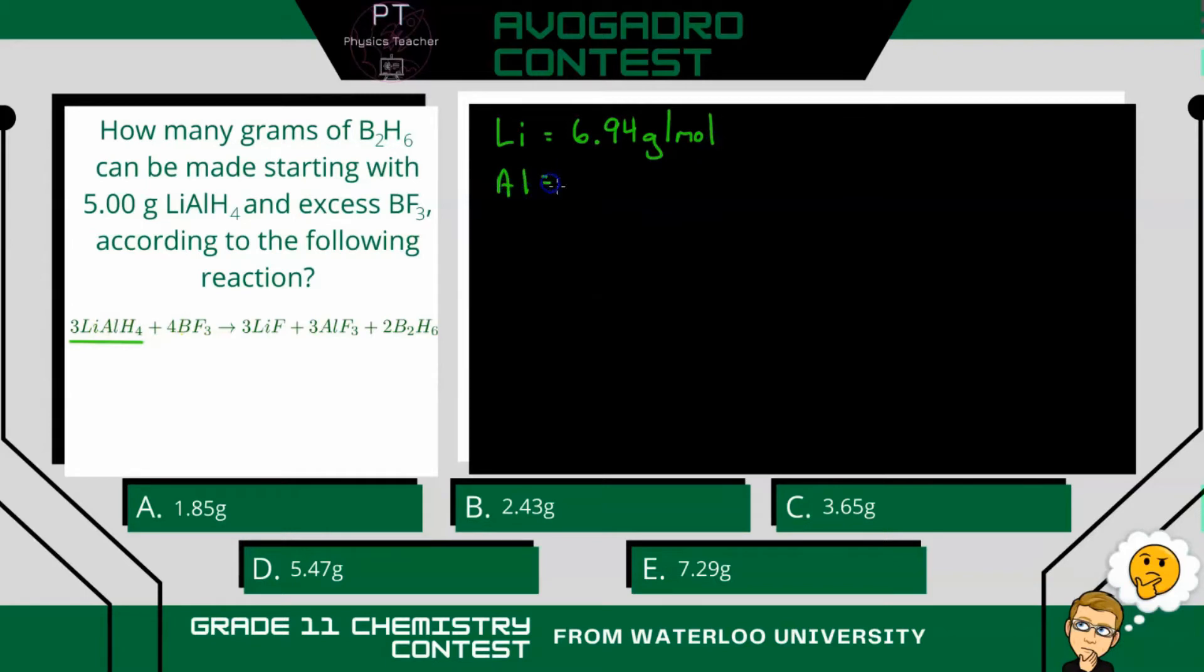Aluminum, you can look that up too, and you'll have 26.98 grams per mole, and you do get a periodic table on this contest. And lastly, we have four hydrogens. So that's going to be 4 times 1.001 grams per mole. And then if you add these together, we get our molar mass of lithium aluminum hydride to be 37.96 grams per mole. So that's the first step.